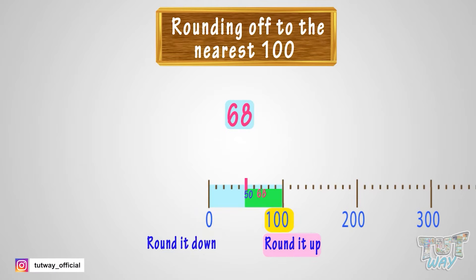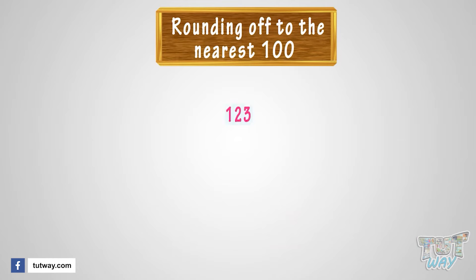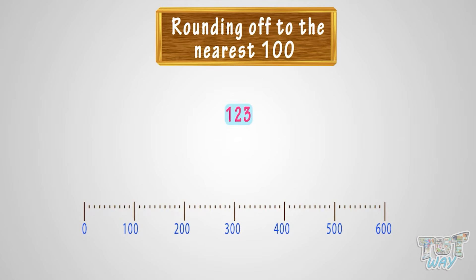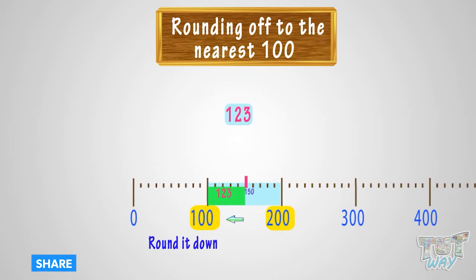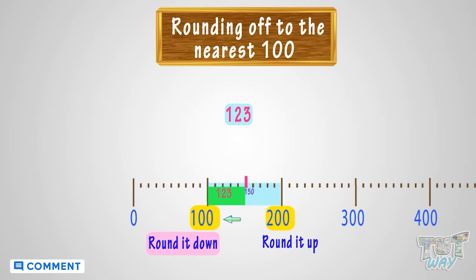Now let's take another example, 123. We have to round 123 to the nearest 100. Let's see where we can fit 123 on this number line. It is somewhere between 100 and 200. Here, the number 23 is before the 50 mark, so we will round it down to 100.